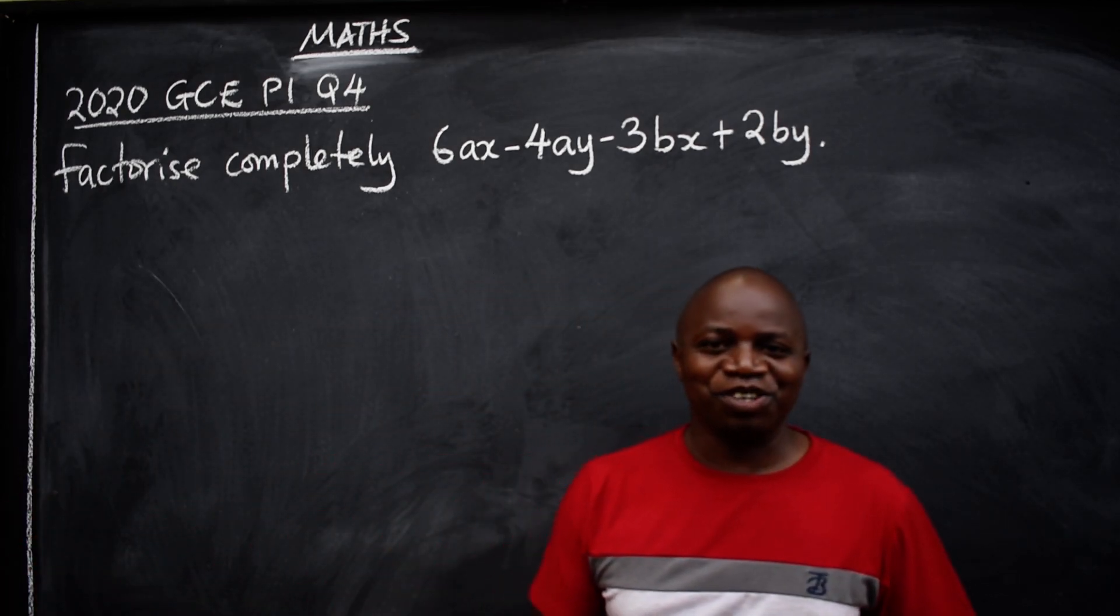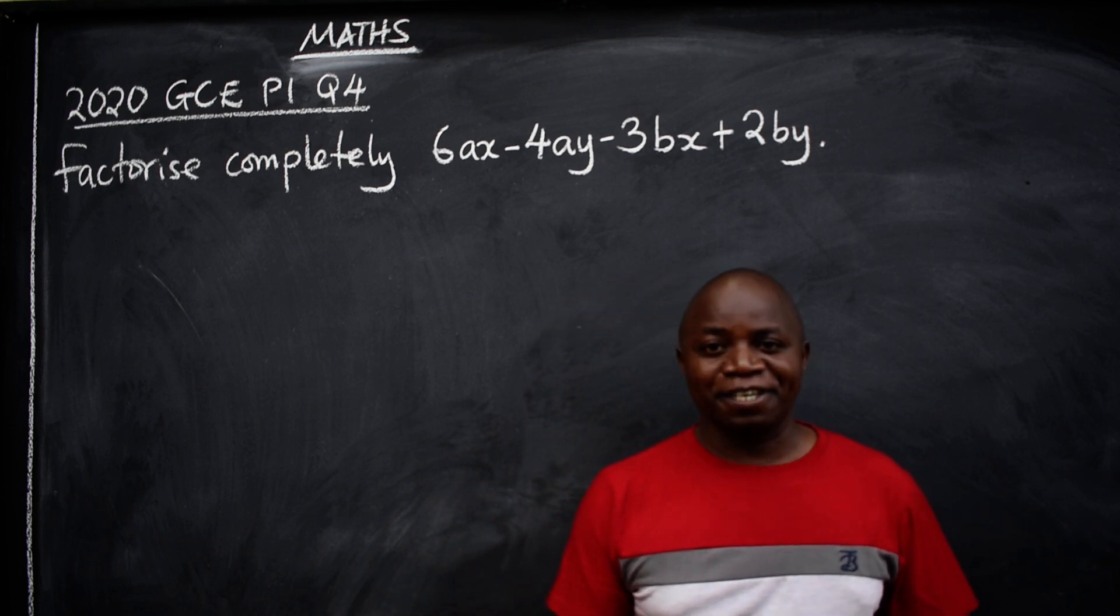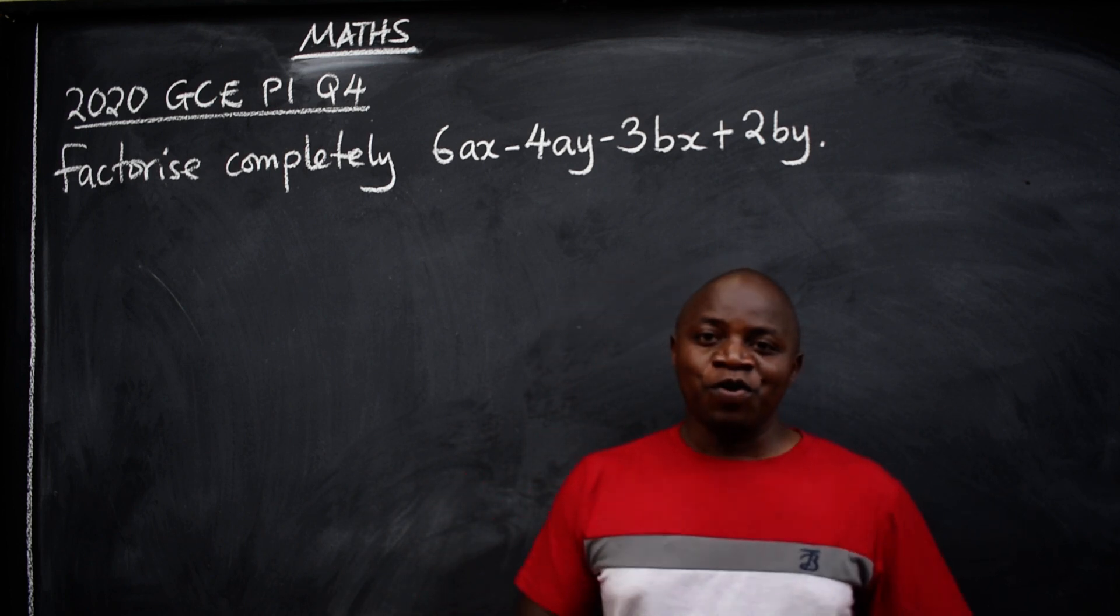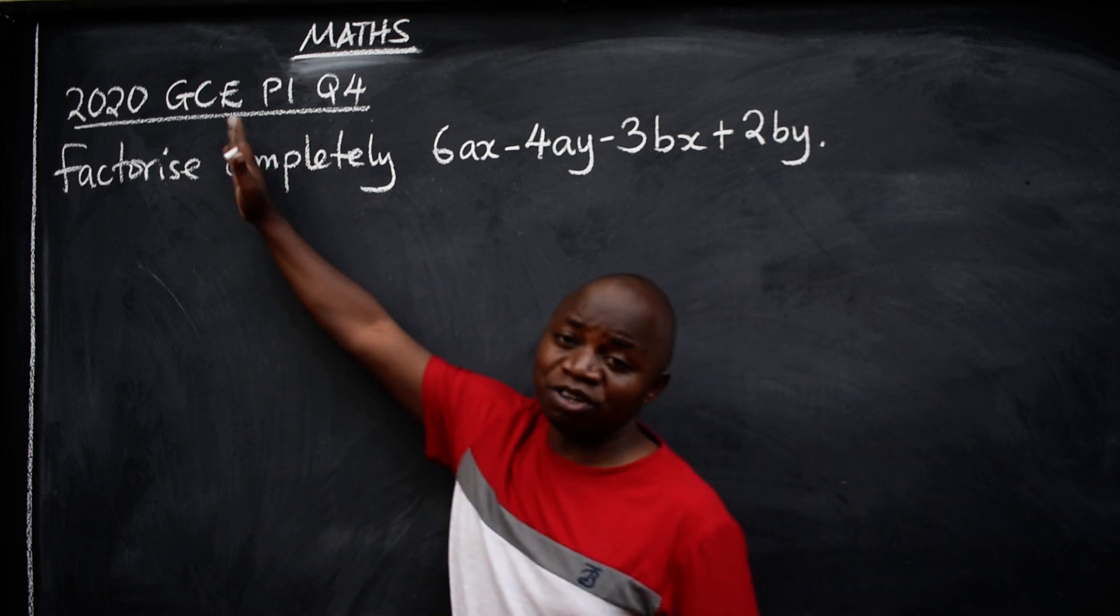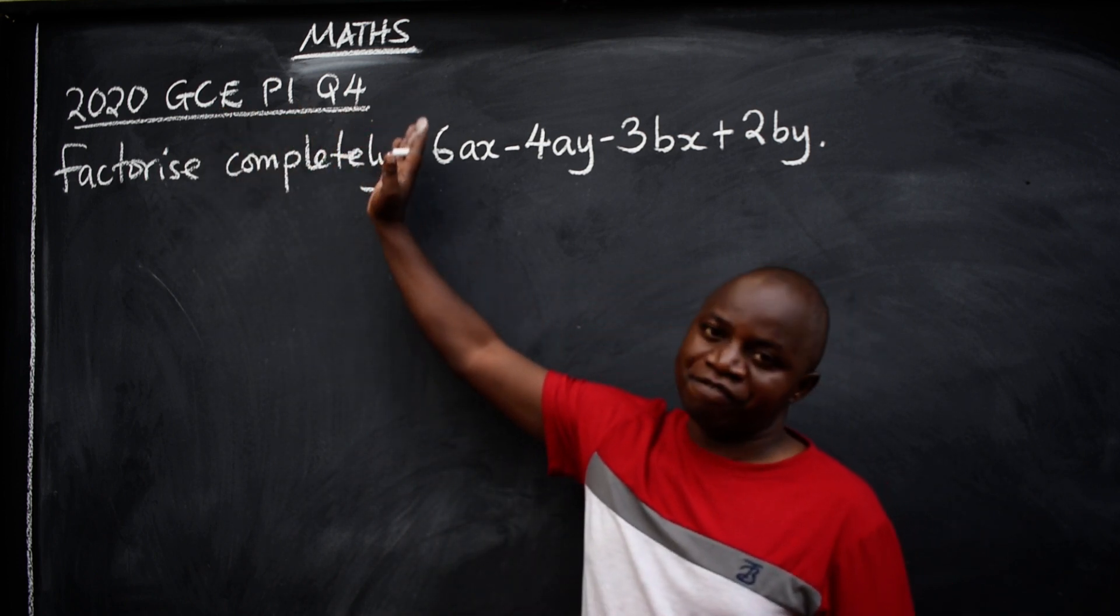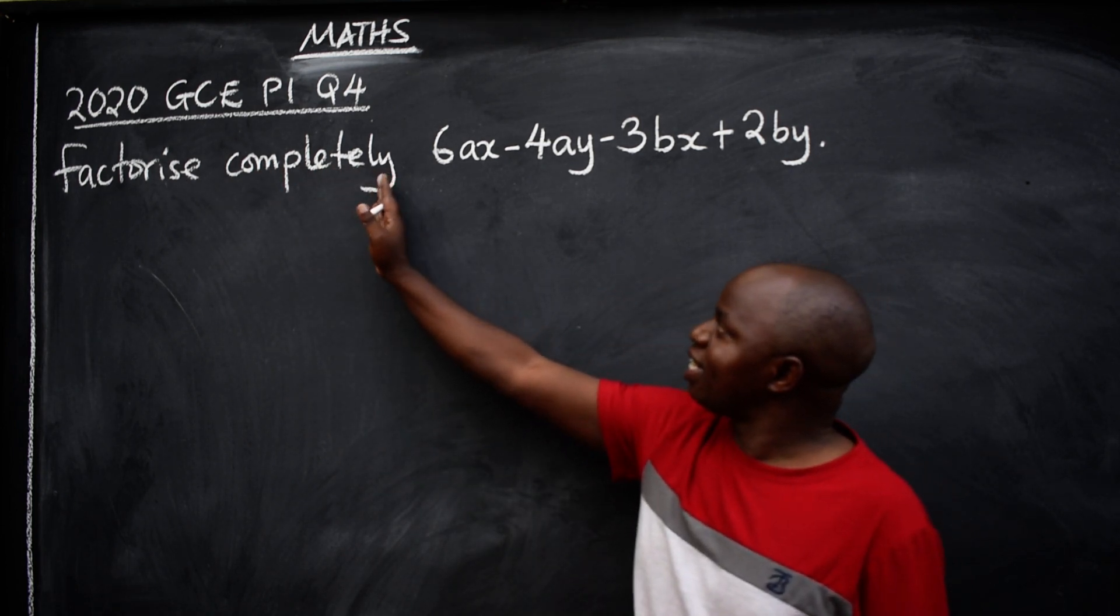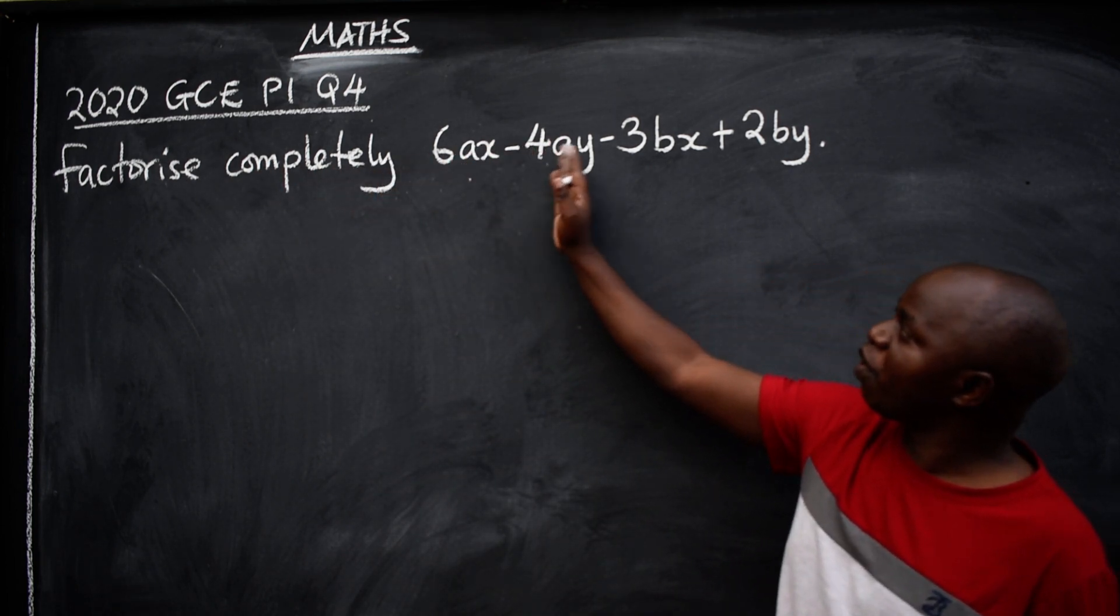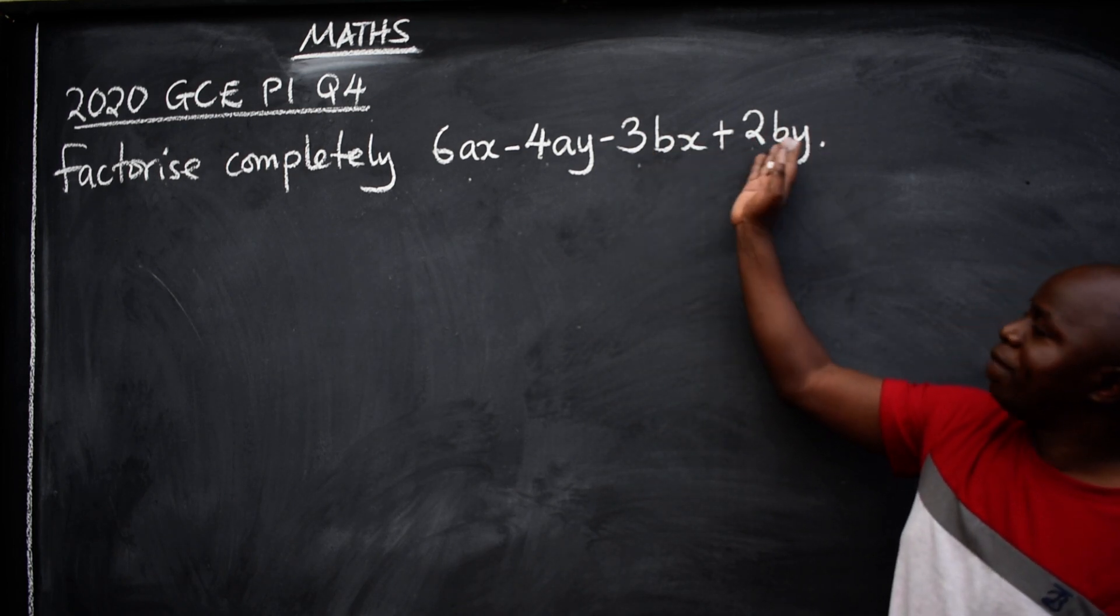Greetings ladies and gentlemen, hope you are doing well. This is mathematics and in this video we want to look at this question coming from 2020 General Certificate of Education GCE Paper 1 question number 4. The question reads: factorize completely 6ax-4ay-3bx+2by.